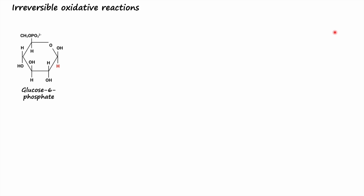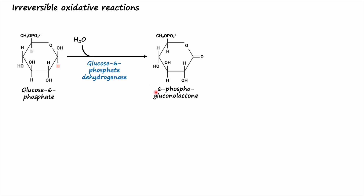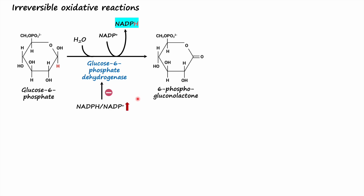The pathway begins with the oxidation of glucose 6-phosphate, producing 6-phosphogluconolactone. The reaction is catalyzed by glucose 6-phosphate dehydrogenase, an enzyme specific for NADP+, which is reduced to NADPH. This is the first and major step of the pathway. The reaction is irreversible and highly regulated — NADPH is also a potent inhibitor of glucose 6-phosphate dehydrogenase.